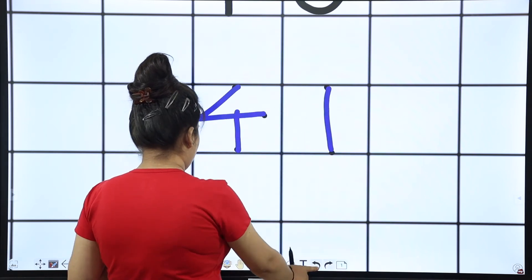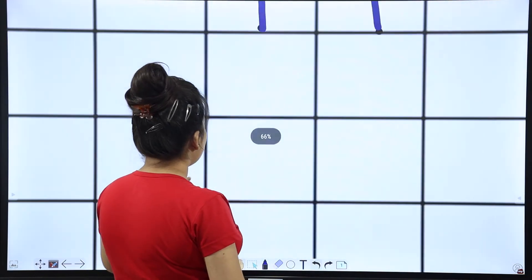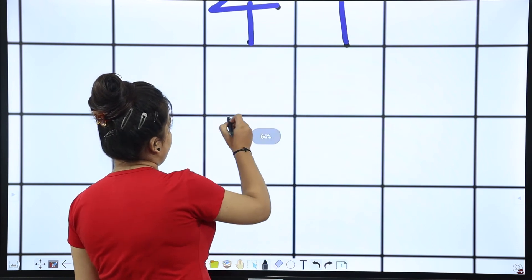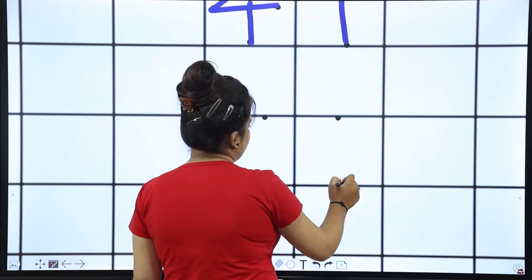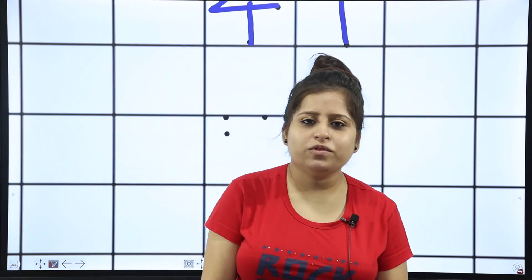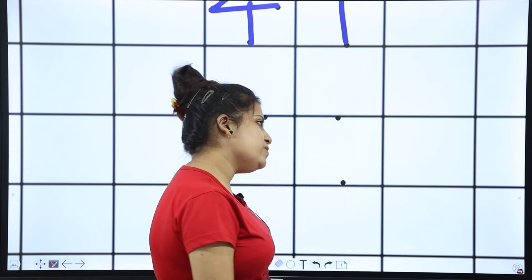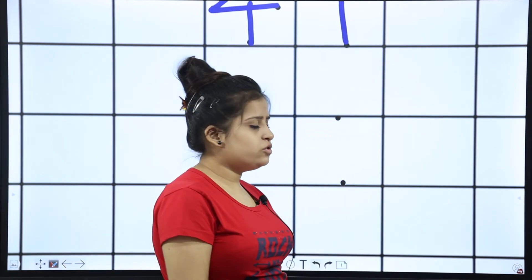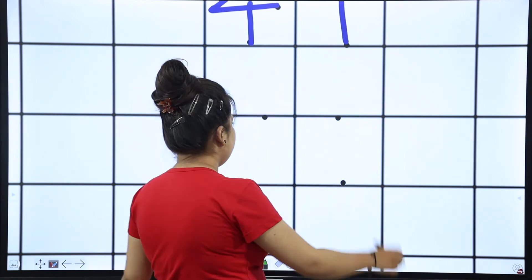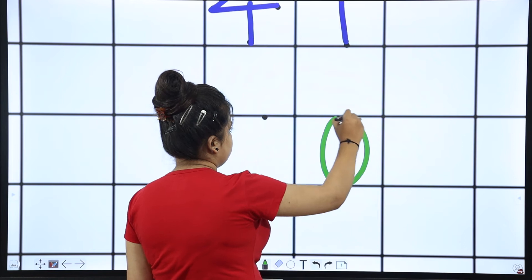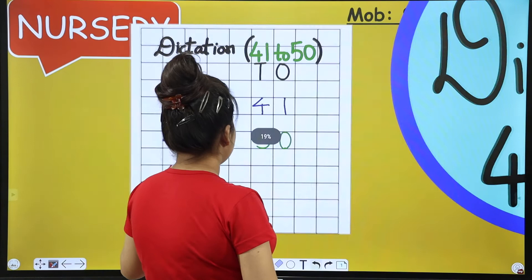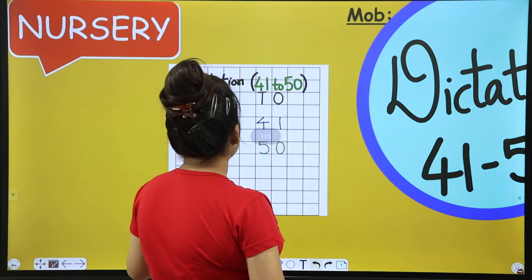And the last number of this class — which number comes after 49? Can anyone tell me please? Which number comes after 49? 50! Yes, you are going to write 50. This is our dictation complete.